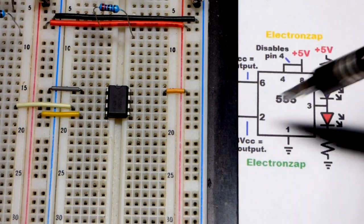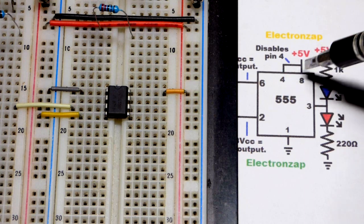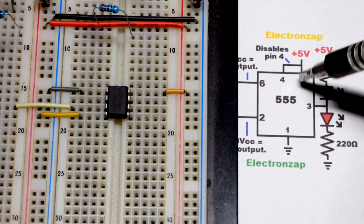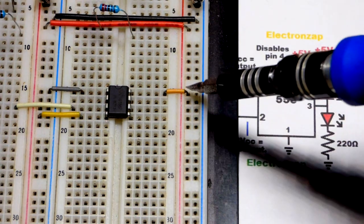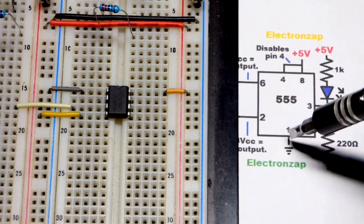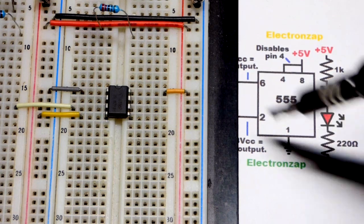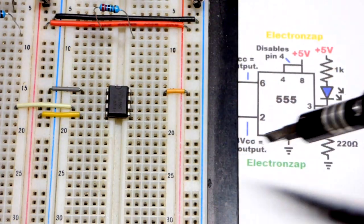To start off looking at this circuit we're going to look at how we wire it up, powering it. Pin number 8 goes to the positive supply. I'm using 5 volts but it's turned off right now. There you can see pin 8 to the positive supply. Pin 1 goes to ground, our negative supply, 0 volts.